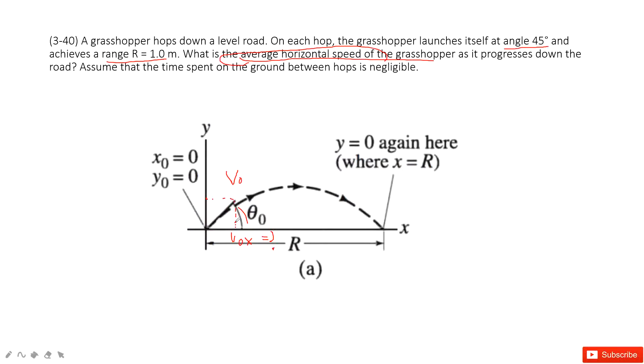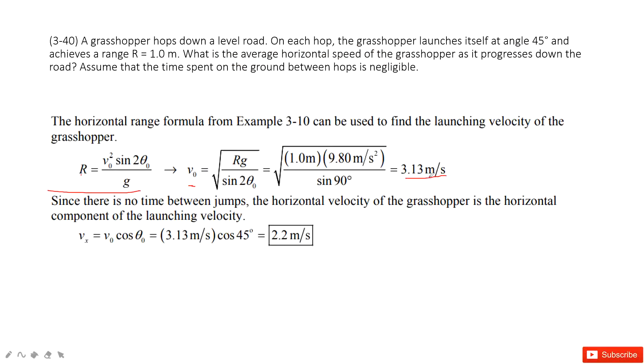Then we need to look at the horizontal component for this initial velocity. So, v0 cos theta.